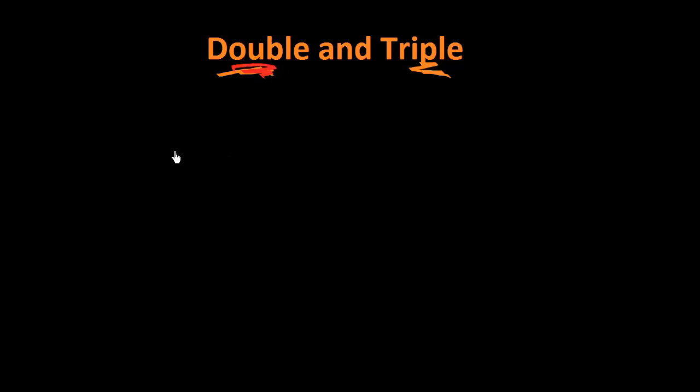So if you double something, let's say you have 5, and if you double 5, you would multiply it times 2, and that equals 10. That is a double. 5 doubled equals 10.